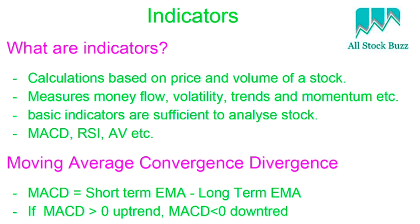My basic indicators are: Moving Average Convergence Divergence (MACD), Relative Strength Index (RSI), and Average Moving Volume. MACD is the subtraction of the short-term exponential moving average from the long-term exponential moving average. If the difference is positive, it indicates an uptrend; if the difference is negative, it indicates a downtrend. Just remember how to use these indicators.